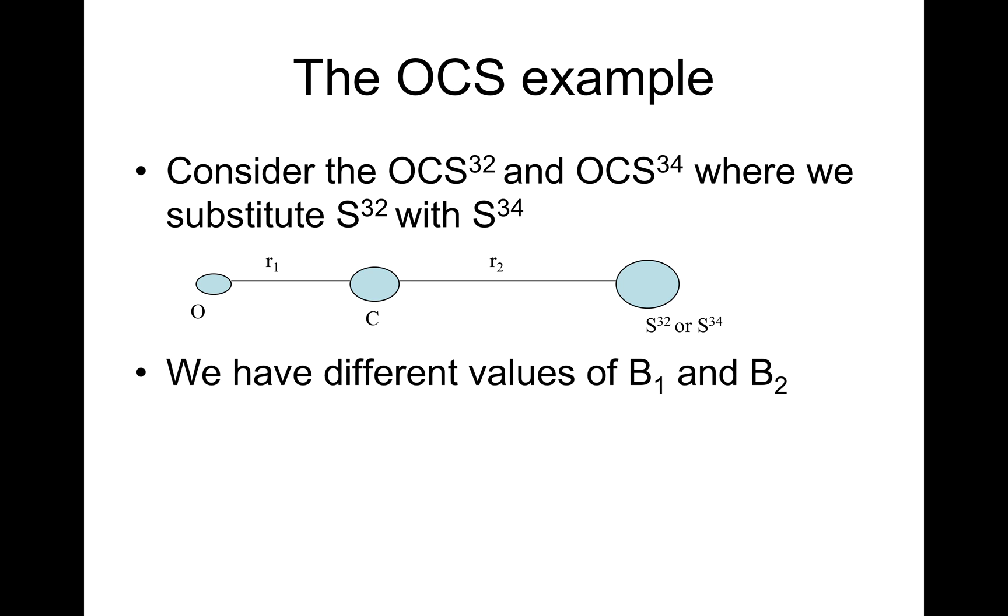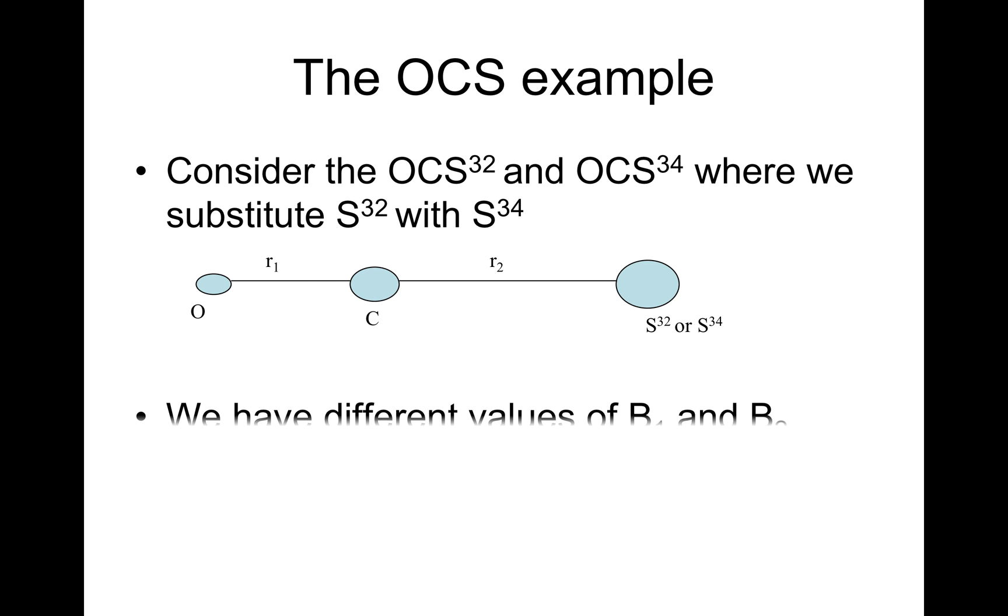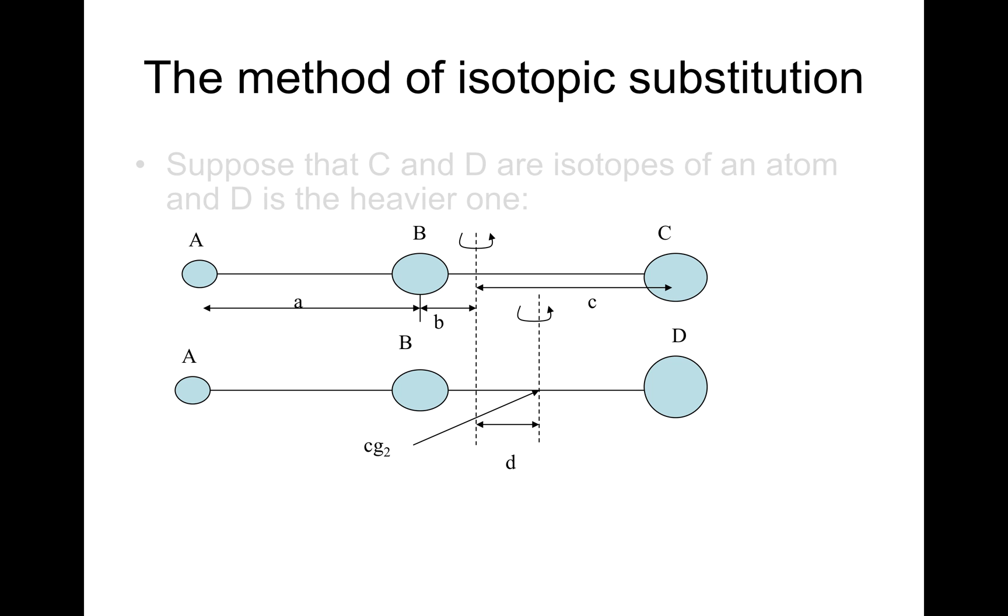We have different values of B1 and B2. Suppose that C and D are isotopes of an atom and D is the heavier one.